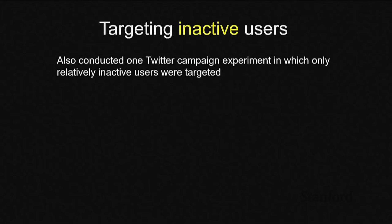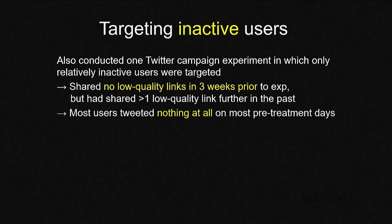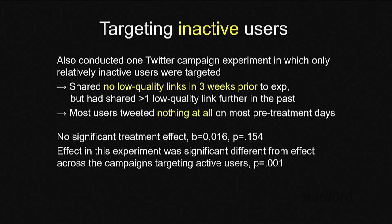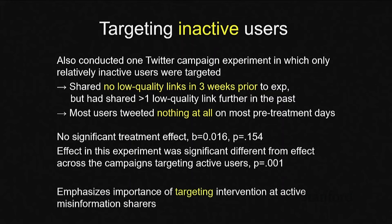We also had a fourth Twitter experiment targeting largely inactive users — people who had not shared any low-quality links in the three weeks before the experiment but had shared at least one longer in the past. Most of these people didn't tweet anything at all in the pretreatment days, and not surprisingly, it didn't do anything for these people. This effect was significantly different from the three experiments that did target active sharers, emphasizing the importance of targeting people who are actually the problem.